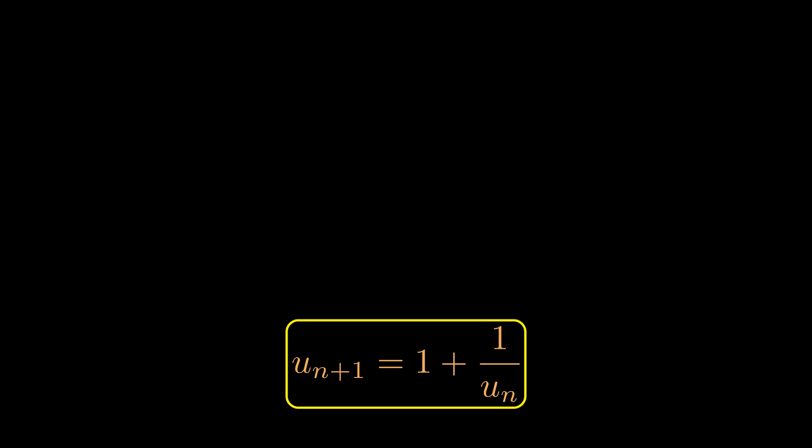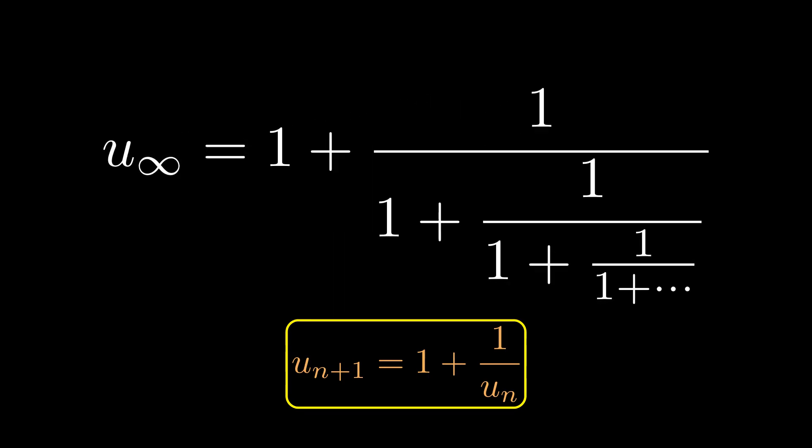Considering the sequence that this recurrence relationship produces, we can see that the final term, or u∞, will be exactly equal to the fraction we want to calculate. Our aim now is to find the last term of the sequence, and to do this we're going to use a new technique which we're going to derive.